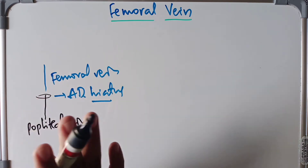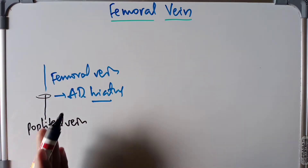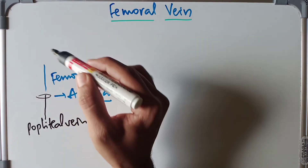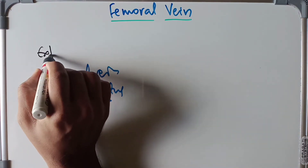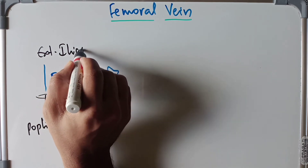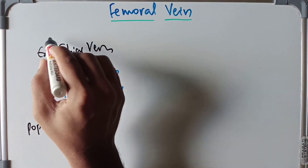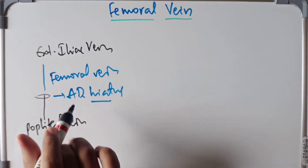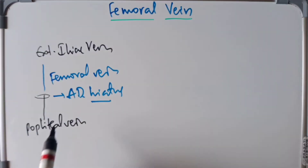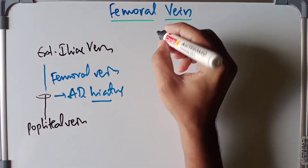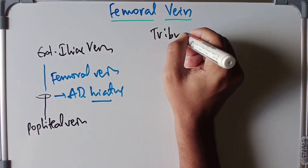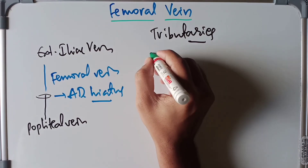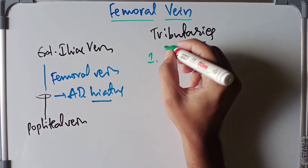In the femoral triangle, the femoral vein traverses through the intermediate compartment of the femoral sheath — there are three compartments of the femoral sheath. It then continues as the external iliac vein, which goes into the common iliac vein, contributing to the formation of the inferior vena cava and finally reaching the right atrium. That is the complete course of the femoral vein. The five main tributaries of the femoral vein are important to know.